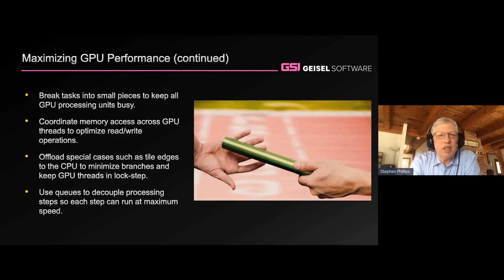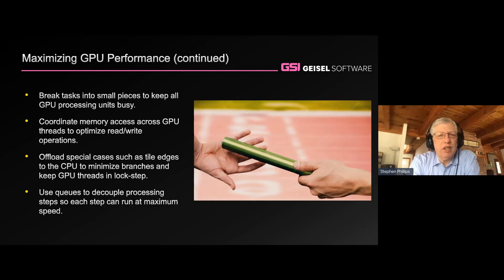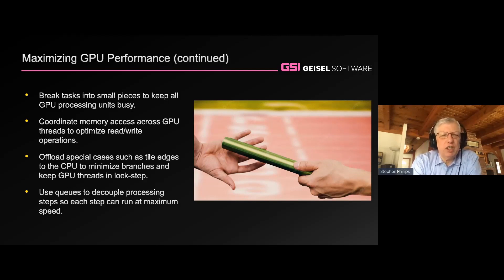GPU threads like to be coordinated, and this can be as simple as making sure threads access contiguous memory. For example, if you're iterating through a 2D video image, it might be better to have threads access multiple areas of the same row of data rather than having each thread pursue a different row. Memory organization and choosing which memory each thread accesses in what order can produce dramatic benefits depending on what GPU you're using.